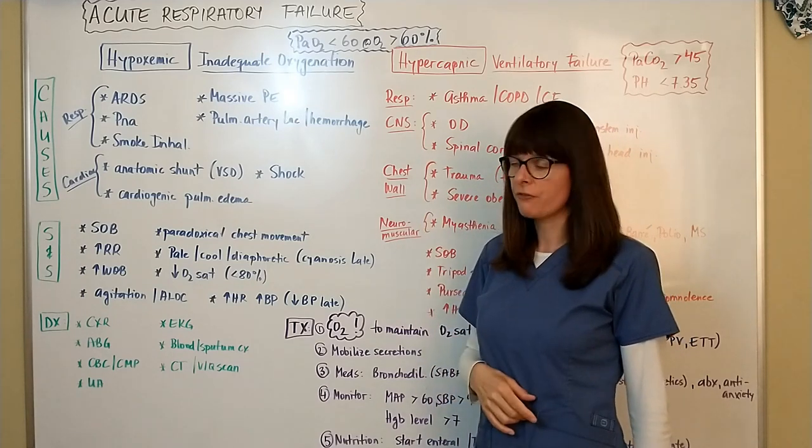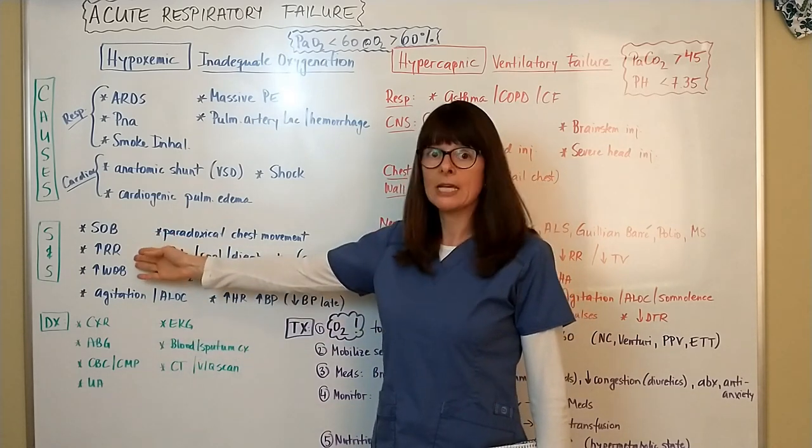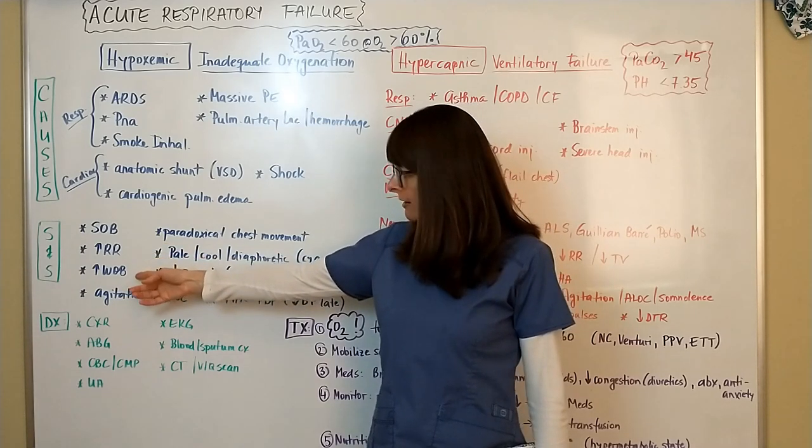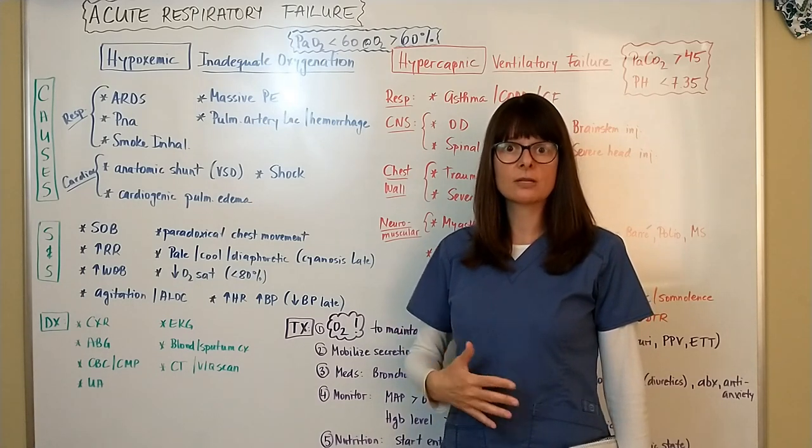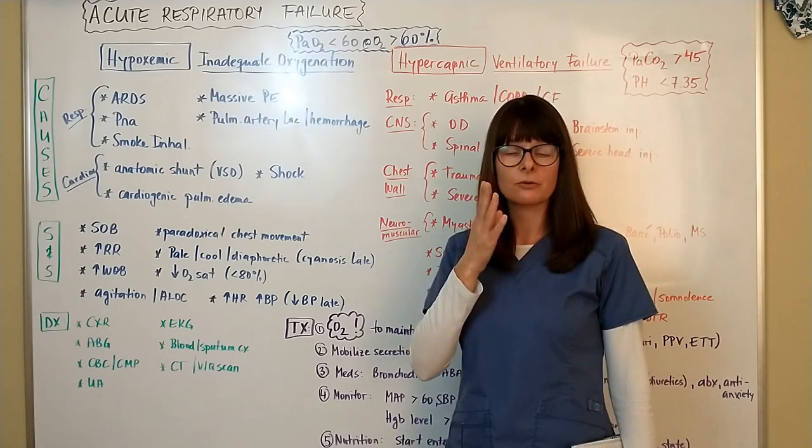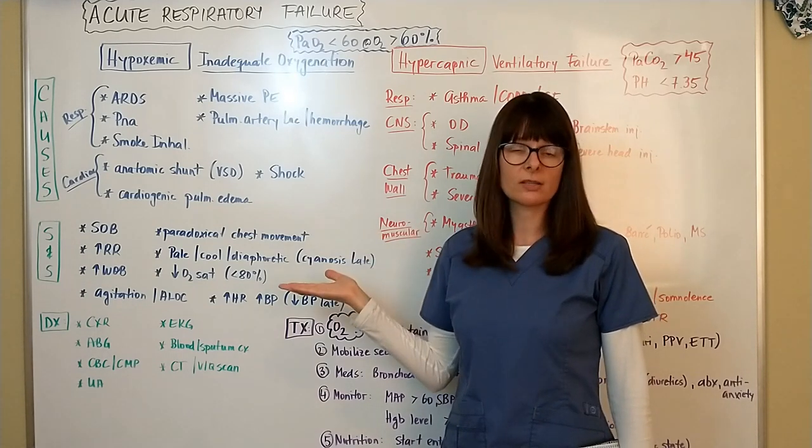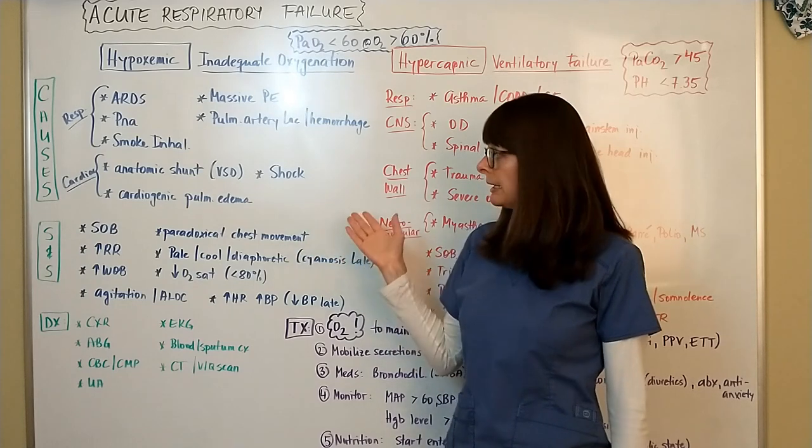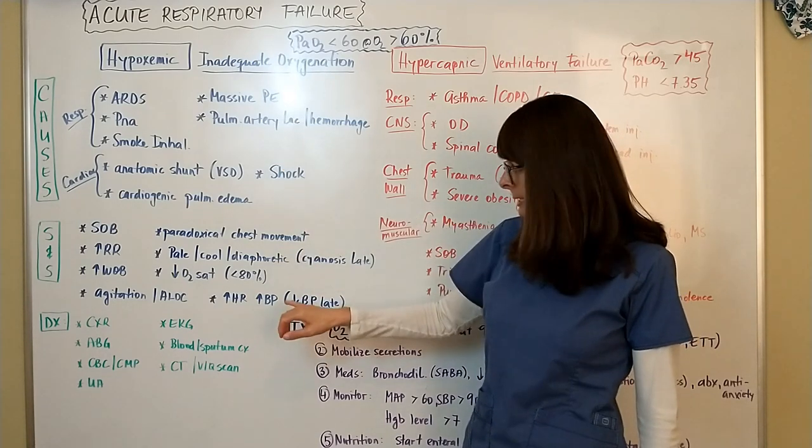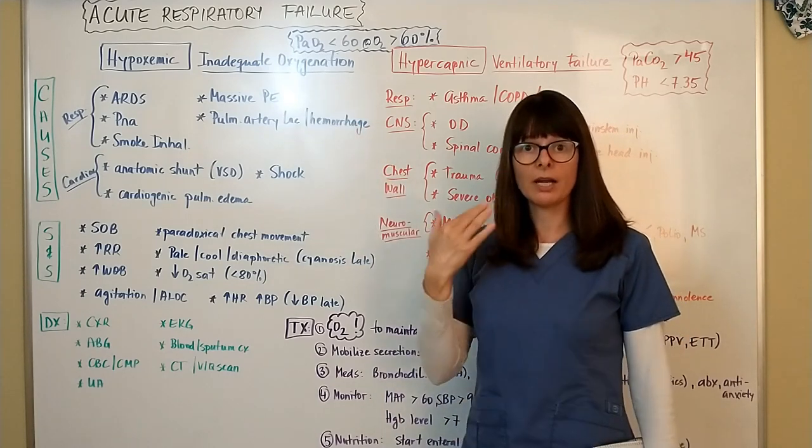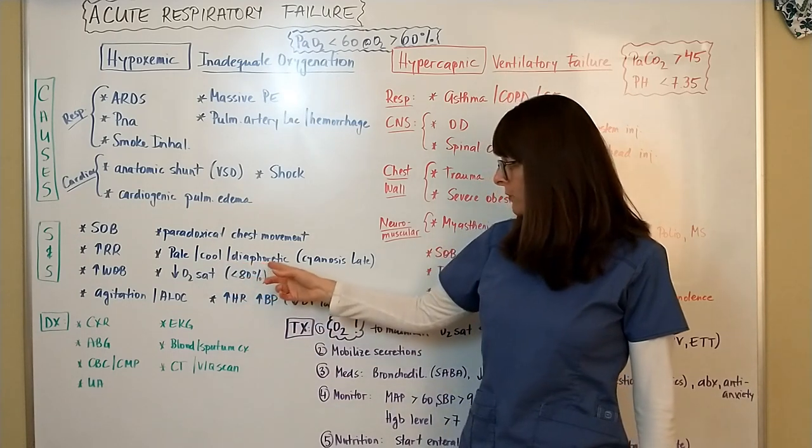Patients with hypoxemic respiratory failure will typically be short of breath as you can imagine if you have inadequate oxygen in your system. They will have increased respiratory rate and increased work of breathing, so we can see that with use of accessory muscles, maybe some intercostal retractions, abdominal breathing. In children sometimes we can see nasal flaring as well as tracheal tugging or supraclavicular retractions. There might be paradoxical chest movement if we've had major trauma to the chest. Because we have not enough oxygenation to the body, oxygen will shunt away from the skin resulting in pale, cool, and diaphoretic skin.